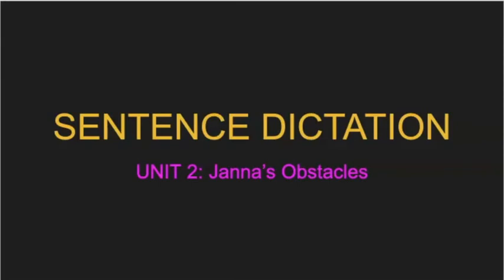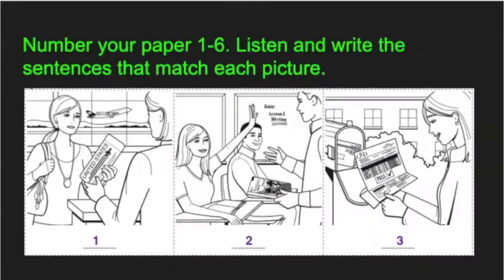Hello students! Today we're going to do sentence dictation. It's for unit two and it's called Jana's Obstacles. What I'd like you to do is get a piece of paper and number one to six, and leave plenty of room because you're going to be writing one or two sentences for each picture. I want you to listen to what I say. I'm going to say it twice and then I want you to write the sentences that match each picture.